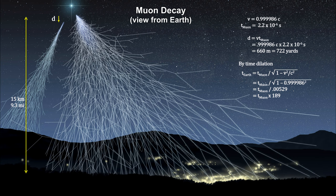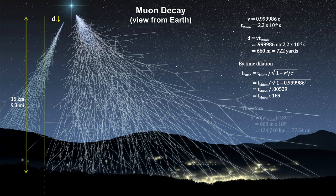This gives the muons time to travel up to 125 kilometers before half of them have decayed. And that's plenty of time for most of them to reach the surface in line with the numbers observed.